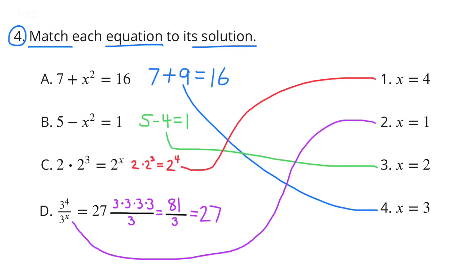Part b: 5 minus x squared equals 1. Since 5 minus 4 equals 1, let's look at solution 3 where x equals 2. Substituting gives 5 minus 2 squared equals 1. We know 2 squared means 2 times 2, or 4, so 5 minus 4 equals 1. Solution 3 is the answer for part b.